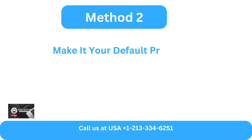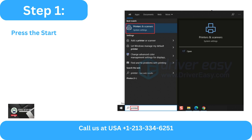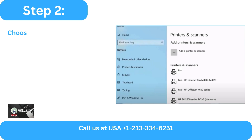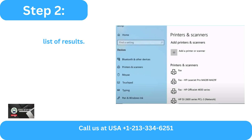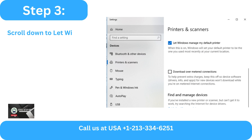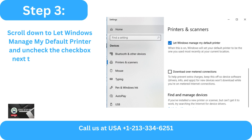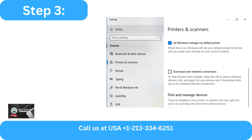Method 2: Make it your default printer. Step 1 - Press the Start button on Windows and type Printers and Scanners. Step 2 - Choose Scanners and Printers from the list of results. Step 3 - Scroll down and uncheck the checkbox next to Let Windows manage my default printer in the Printers and Scanners window.